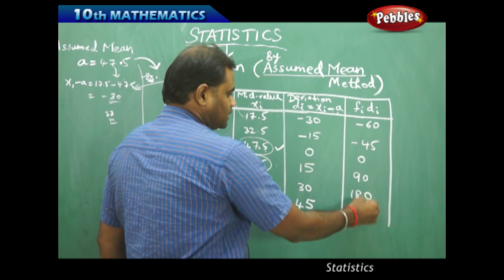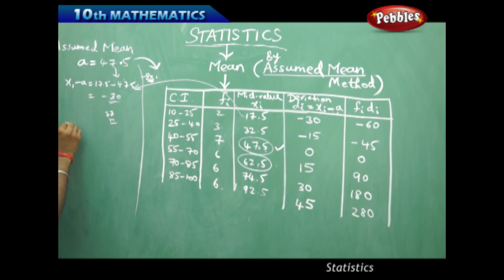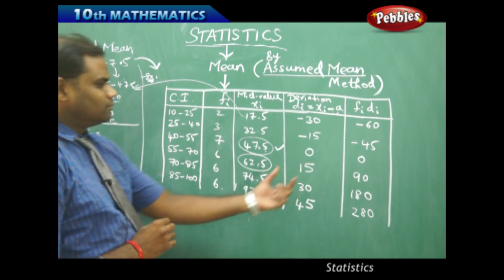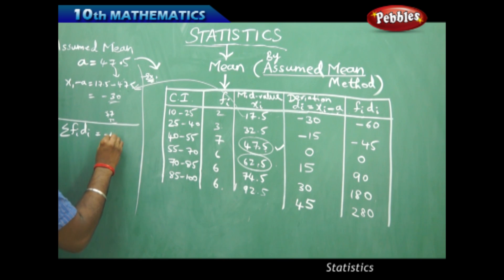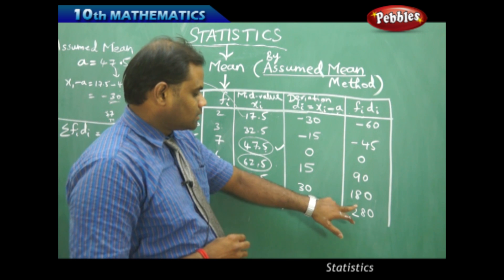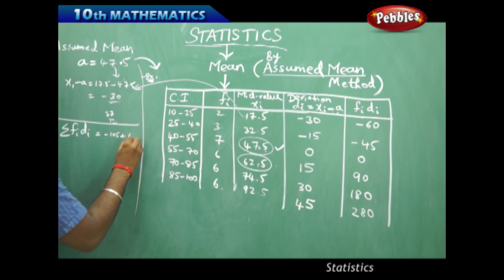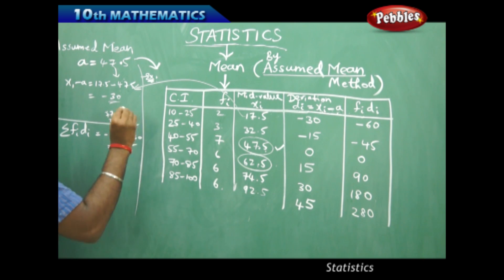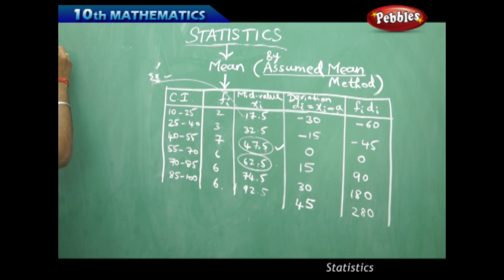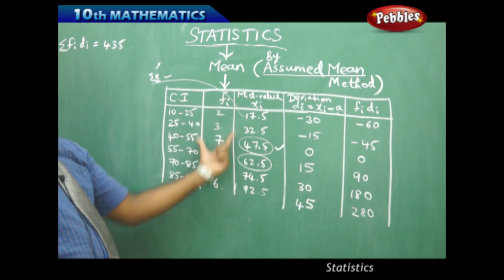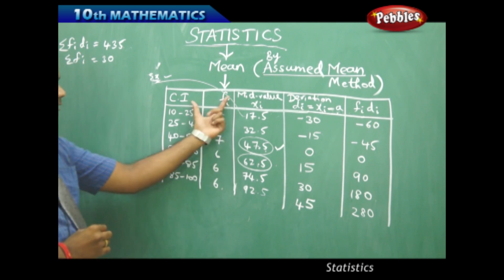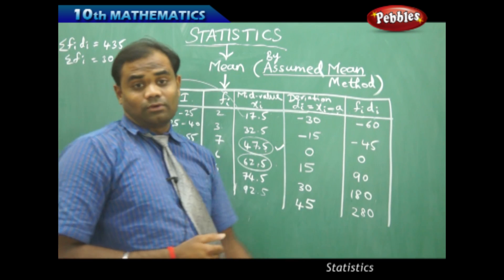Now adding all fi·di values gives us sigma(fi·di). Adding the values: the negative terms sum to −105 and the positive terms sum to 540, giving sigma(fi·di) = 435. Also, when we sum all the frequencies, we get sigma(fi) = 30 from the frequency column. So sigma(fi) = 30 and sigma(fi·di) = 435.